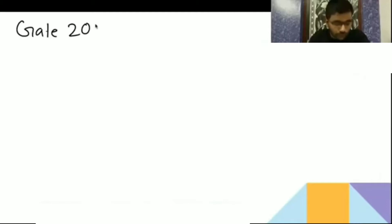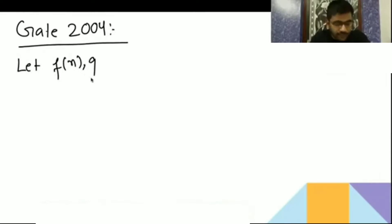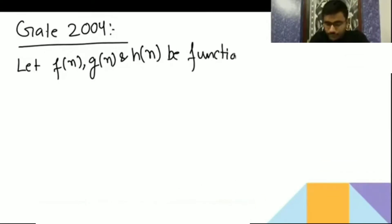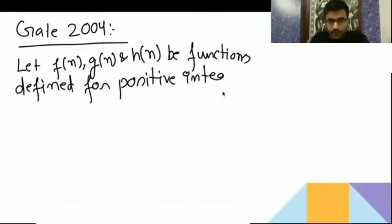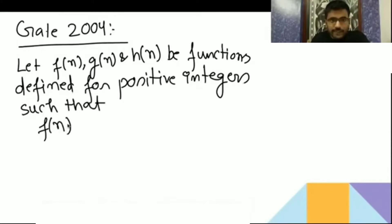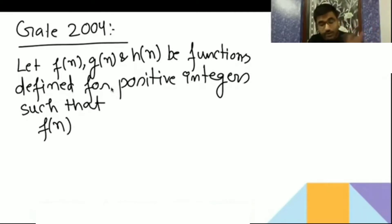This is GATE 2004. Let F(n), G(n), and H(n) be functions defined for positive integers such that F(n), G(n) and H(n) are defined for positive integers. They are not saying what the exact functions are, but they are saying that F(n) is equal to big O of G(n).